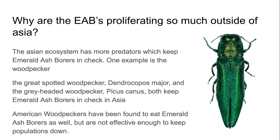The Asian ecosystem has way more predators. We've got some in America too, but not nearly as many. They've got the great spotted woodpecker, Dendrocopos major, and the gray-headed woodpecker, Picus canis in Asia, that eat emerald ash borers right out of the tree. American woodpeckers do eat emerald ash borers, but they're not effective enough predators to keep the population down to where it needs to be.